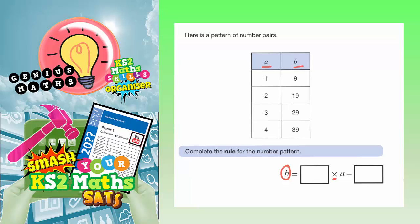You may notice that 9, 19, 29 and 39 are all 1 less than numbers in the 10 times table. So 9 is 1 less than 10, 19 is 1 less than 20, 29 is 1 less than 30 and 39 is 1 less than 40.